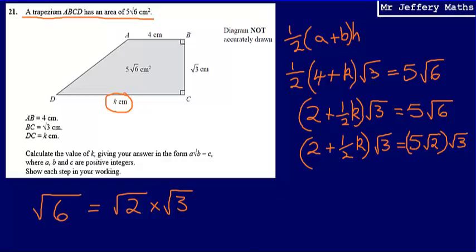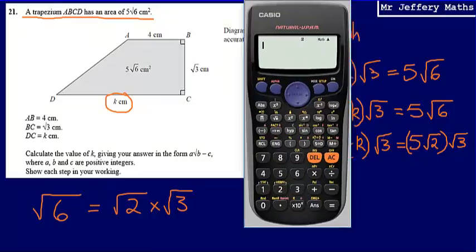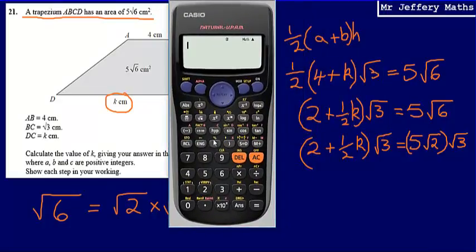And I mean, we've got it. It's a calculator paper. We could just check that just to prove that this is correct. So 5 root 6 comes up as 5 root 6. If I were to do 5 root 2 multiplied by root 3, that comes up as 5 root 6 as well.